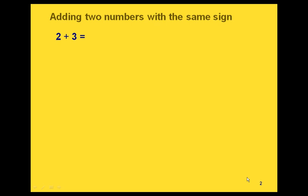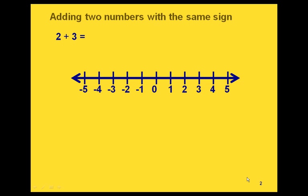If we're adding two positive numbers, we could go ahead and do the addition. But let's look at how we would use a number line to do this. We're always going to be starting at 0 — that's always going to be our starting point. We're going to use arrows to represent the numbers we're adding. Our 2 is going to be represented by an arrow that goes two units to the right, and our 3 will be represented by an arrow that goes three units to the right.